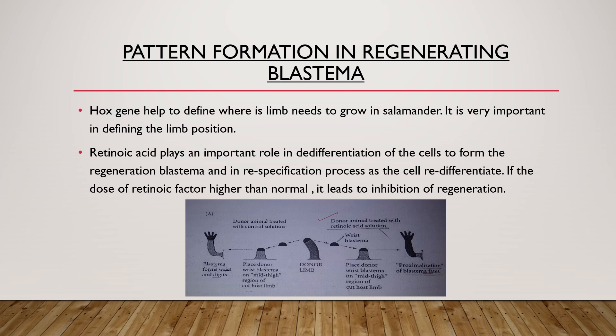Retinoic acid also plays an important role in de-differentiation of cells to form the regeneration blastema and in the re-specification process as cells re-differentiate. If the dose of retinoic acid is higher than normal, it leads to inhibition of regeneration. A diagram shows a donor animal treated with retinoic acid versus a donor animal treated with control solution. The limb treated with retinoic acid leads to the formation of a complete structure via proximalization of blastema, whereas in control solution, it forms only a specific organ — a wrist and digits.